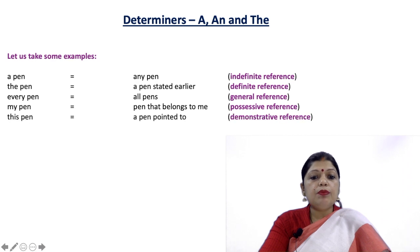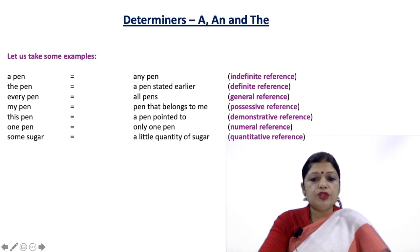This pen: a pen pointed to - demonstrative reference. One pen means only one pen - numeral reference. Some sugar: a little quantity of sugar - quantitative reference.